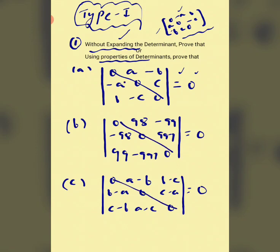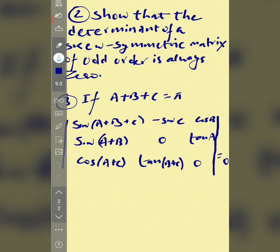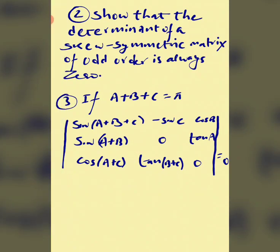The off-diagonal elements are negatives of each other: minus a, minus b, minus c and so on — a minus b, negative b minus a, c minus b, negative b minus c. This confirms it is a skew-symmetric matrix. Let us move to question number 3.